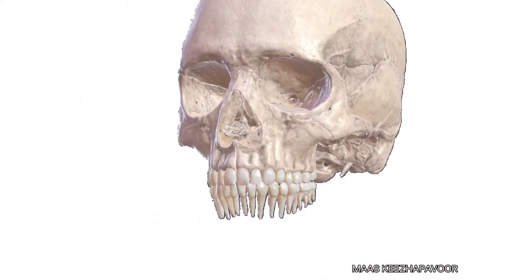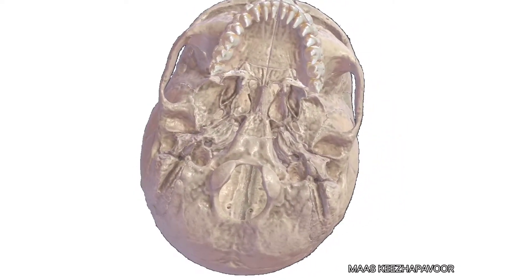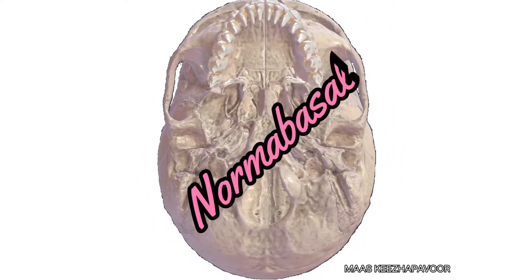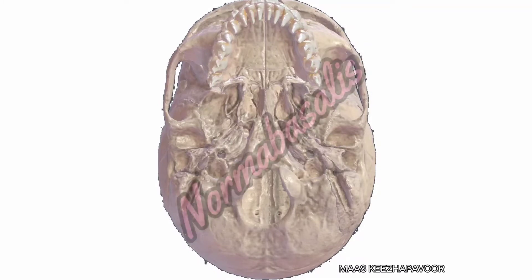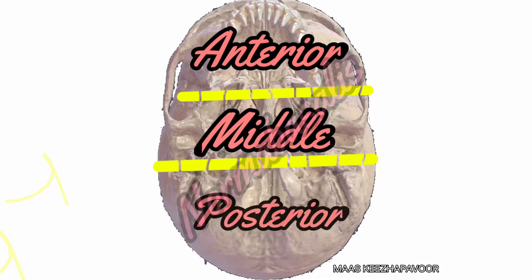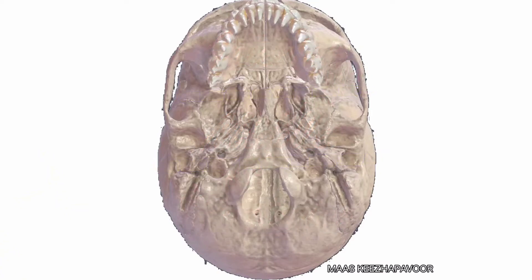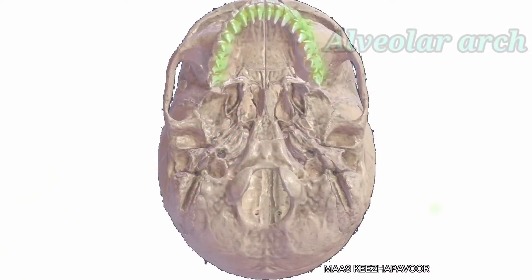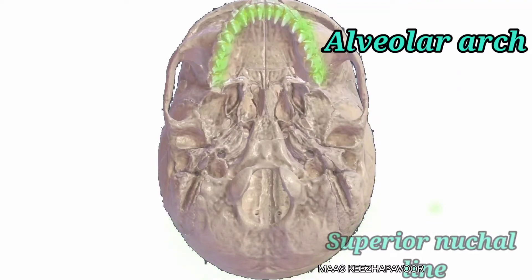The inferior surface of base of skull is the Norma basalis. It is studied in three parts: anterior, middle and posterior. Norma basalis extends from the alveolar arch in front to the superior nuchal line behind.